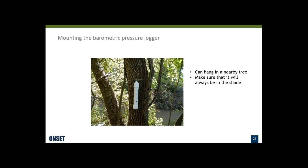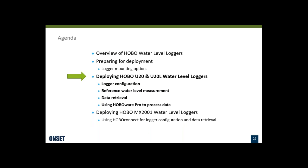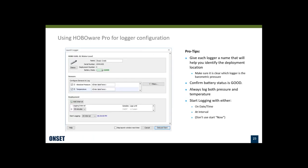You can also import barometric pressure from a nearby weather station, but it gets a little trickier to bring that in, so I usually recommend just using one of our U20 loggers to record barometric pressure. I'll show you in a little bit what it's like to use that barometric pressure data in our software to get the water level data.